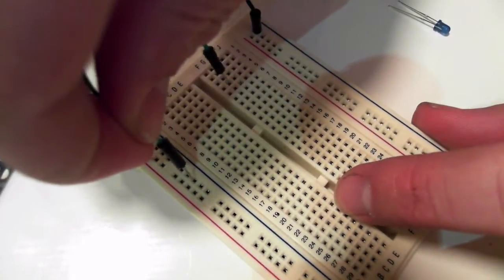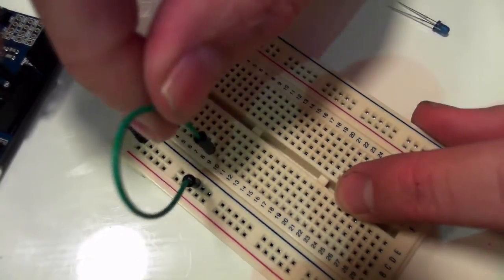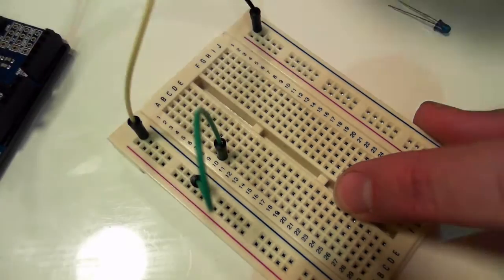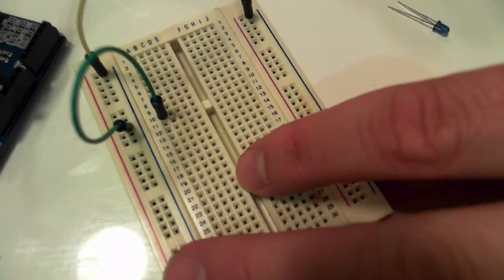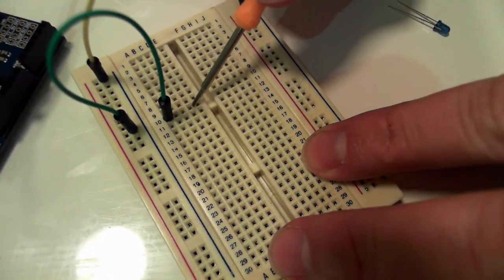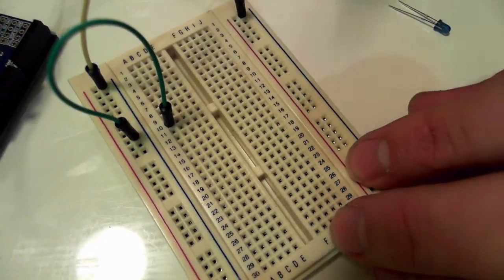I want to plug in my positive, so it doesn't matter where I plug it in, and I'm going to plug it into 10. So I've plugged in my positive into 10, which means anything along here is going to be positive. This bit here is a break. Nothing gets across there.